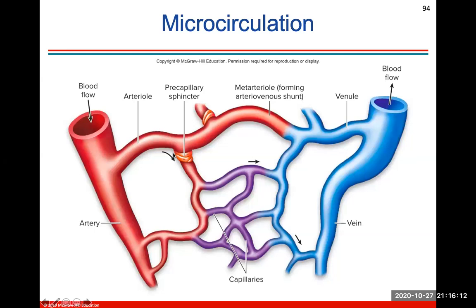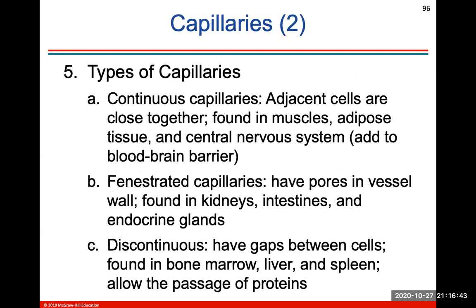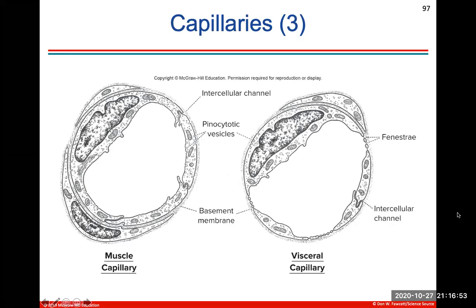Microcirculation describes how precapillary sphincters in your arterioles constrict or dilate to control blood flow through the capillaries and back through venules and veins. Capillaries are the smallest blood vessels — this is where gases and nutrients are exchanged between blood and tissues, regulated by vasoconstriction and vasodilation of arterioles. There are three different types of capillaries you should know.